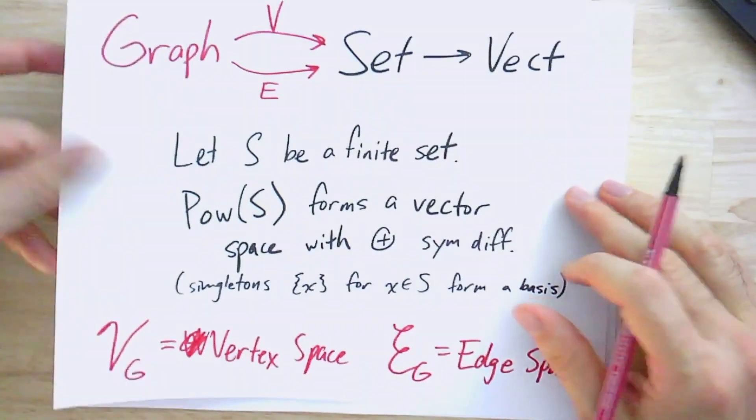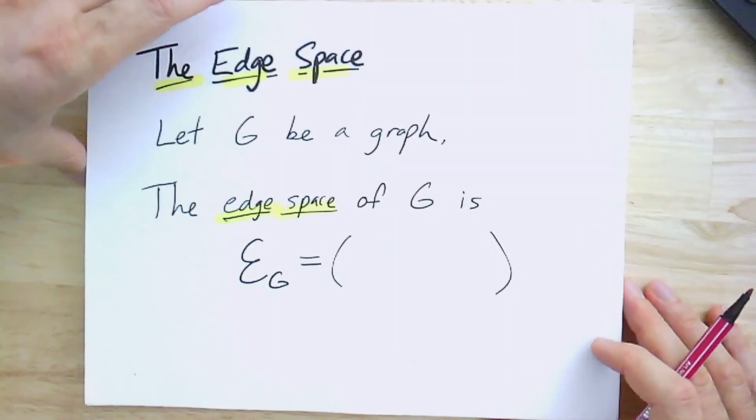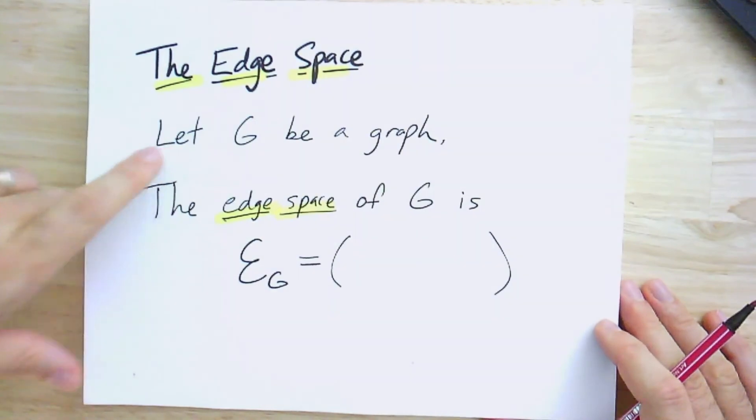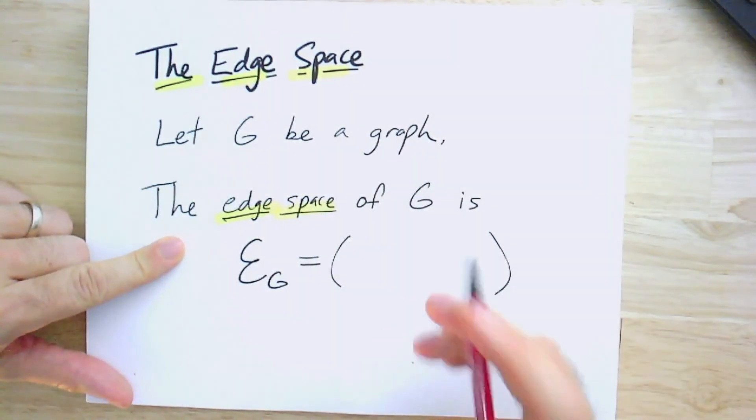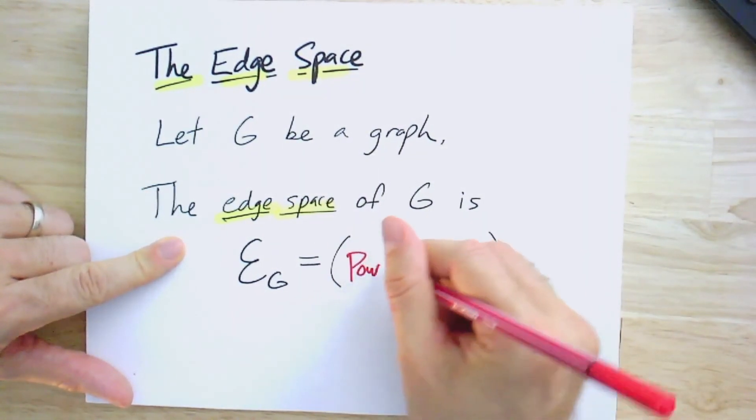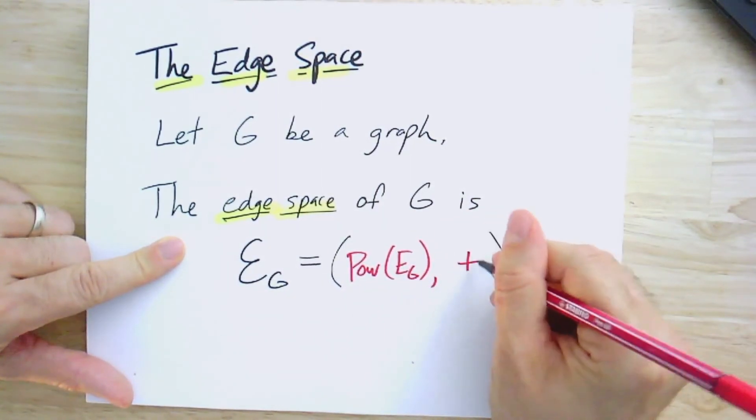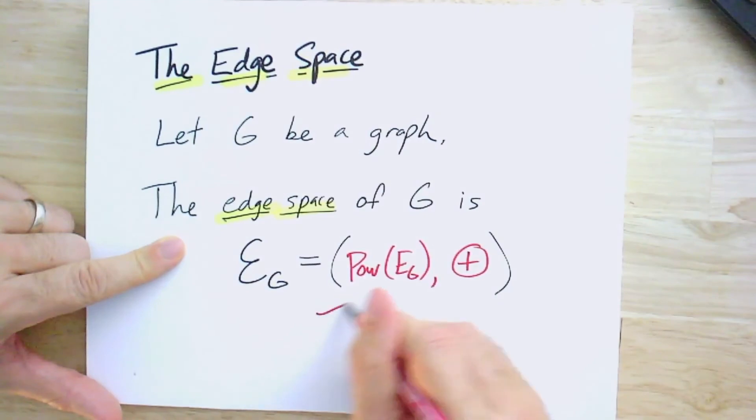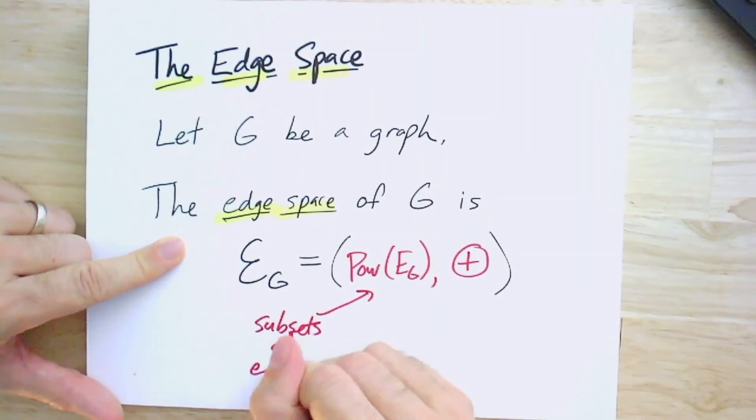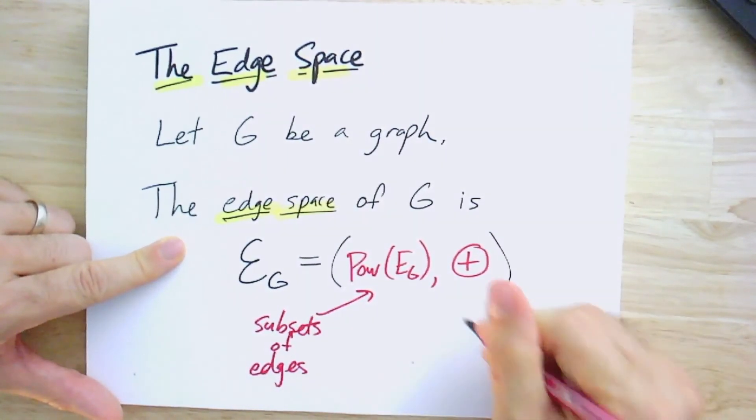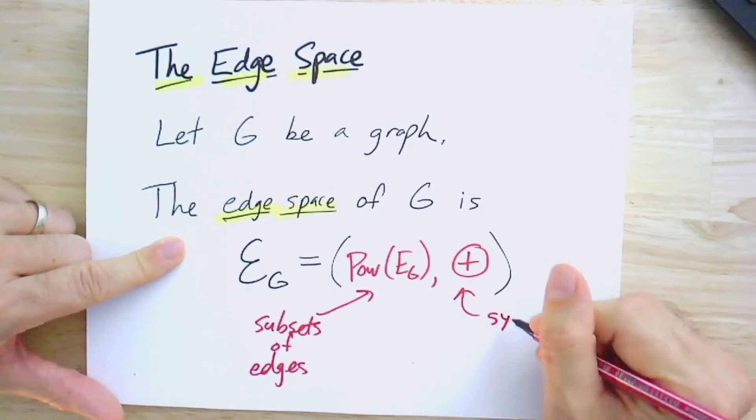So let's dive into one of these in a little bit more detail just to get a better feel for it. If G is our graph, this edge space, as we said, was the power set of the edges with the operation of symmetric difference. So the elements here, or the vectors, are subsets of edges. And this is symmetric difference of those sets.